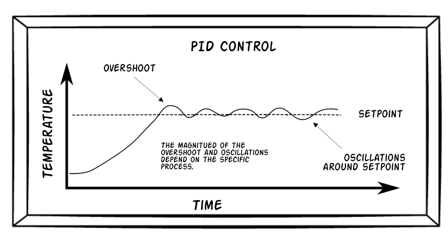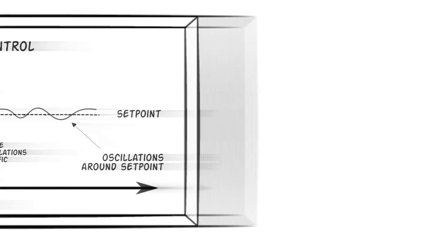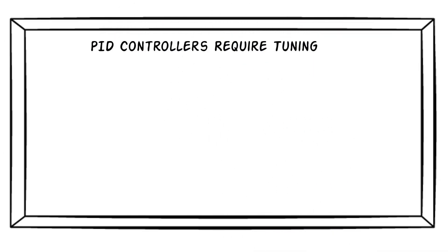One final topic I'll cover is tuning a PID controller. All PID controllers require tuning to adapt the controller to the specifics of the process. Tuning is a necessary function for accurate and precise control. To explain why tuning is needed, we'll take one last look at the PID equation.